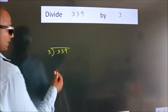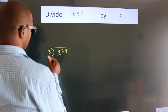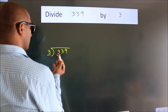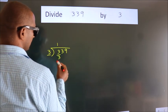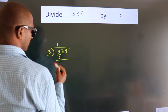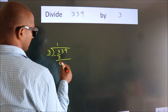Next, here we have 3. Here 3. When do we get 3? In the 3 table. 1 three is 3. Now we should subtract. We get 0.